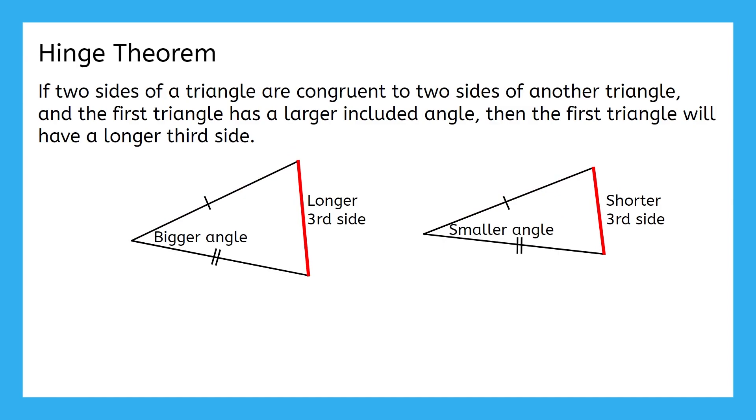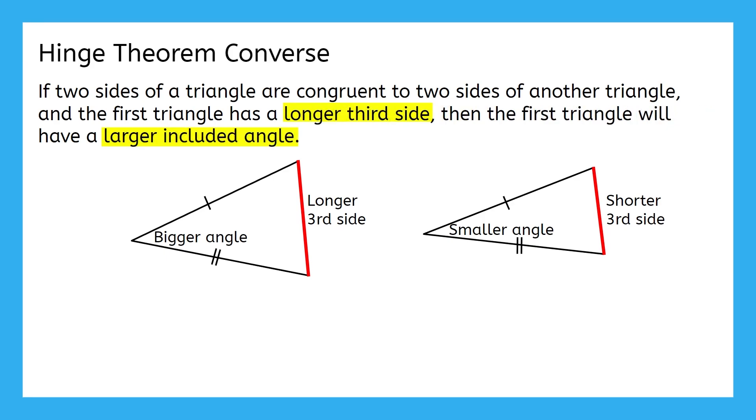We can also use the converse to the Hinge Theorem, which takes these two statements and switches them. This allows us to start with the lengths of the third side, and figure out which angle is bigger. In a moment we'll complete two example problems, one that uses the Hinge Theorem, and one that uses its converse. So take some time to catch up on your notes template now.